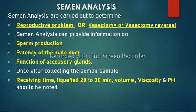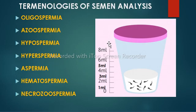Once after collecting the semen sample, the receiving time is noted down. The sample has to be liquefied for 20-30 minutes by placing it at a heating block or incubator at 37 degrees centigrade. After liquefication, mix the sample homogeneously using a transfer pipette. The sample volume, viscosity and pH should be noted.